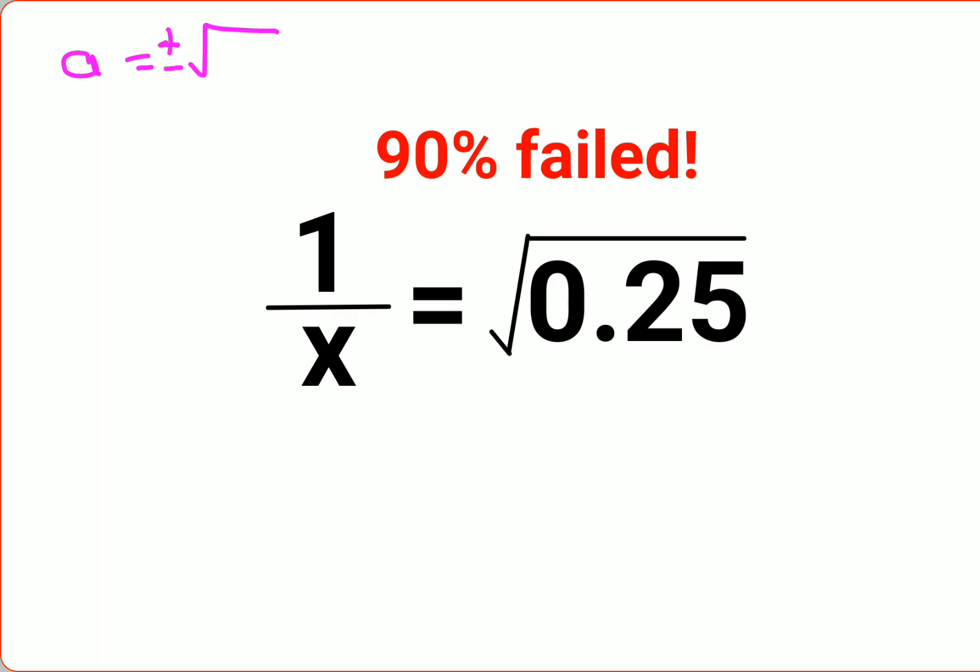But now since here it is directly given as root of a positive value, then here you don't have to worry. You just keep the root as positive only. This is where a lot of people got stuck because they thought that the answer will be in terms of positive negative. No. Here when they have directly told you that it is a positive root, then the answer will always be in the form of positive value.